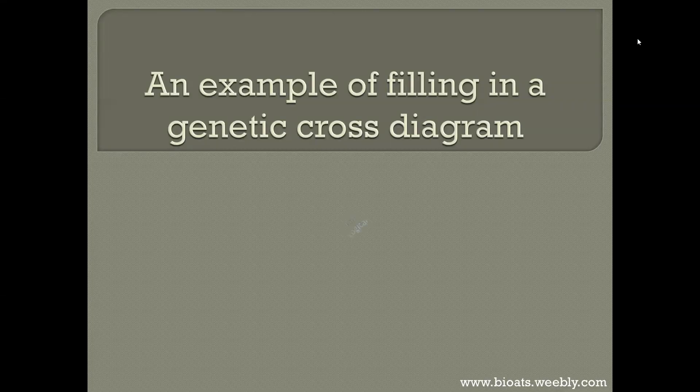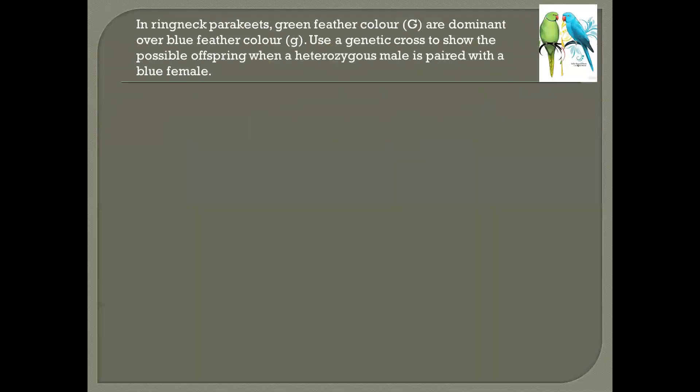An example of filling in a genetic cross diagram. The question states that in ringneck parakeets, the green feather color, represented by capital G, is dominant over blue color feathers, which is a small letter g to represent the recessive allele. We're asked to use a genetic cross to show the possible offspring when a heterozygous male is paired with a blue colored female.